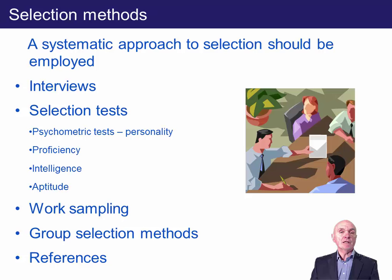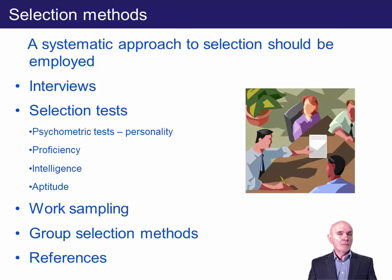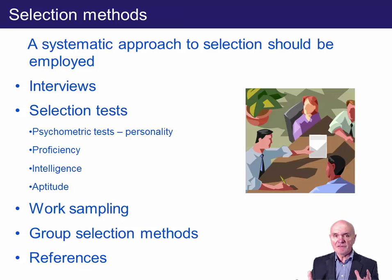Remember, if you recruit the wrong people, it's very expensive — not so much in getting rid of them, but because you've wasted time. Maybe three months has gone by from formulating what you need to interviewing, and if you get the wrong person, another three months has to be taken up. Group selection methods are very sophisticated and can take two or three days. They are used normally where the employee is going to be of such importance that you want to be sure you get them right.